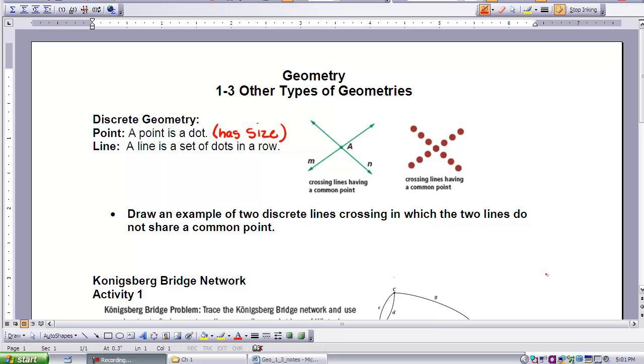In Lesson 1-1, a point was described as an exact location. In Lesson 1-2, a point was described as a location in the plane identified by an ordered pair of real numbers. In this lesson, you will examine two other common descriptions of points. This is important because different descriptions of points and lines serve as a foundation for different types of geometry.